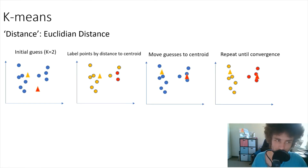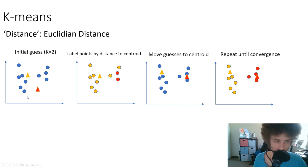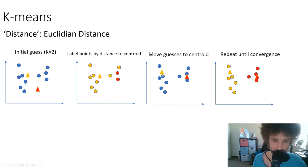The first clustering method we'll talk about in detail is K-means. The distance used here is Euclidean distance. You start with an initial guess — say k equals two — you have unlabeled data points and you randomly place two centroids. Then you label everything closer to one centroid as yellow and the other as red. After that, you move each centroid to the mean of all the points labeled to it, recalculate distances, and repeat until it converges to a final clustering.